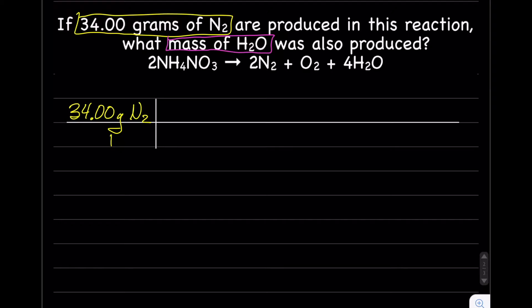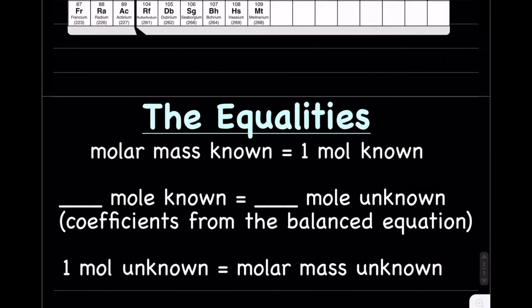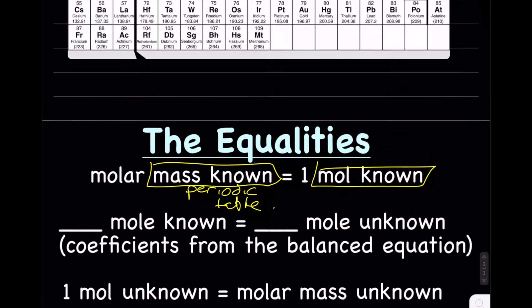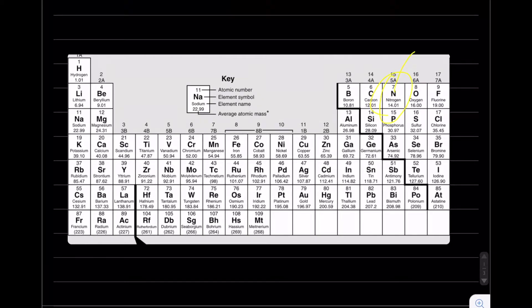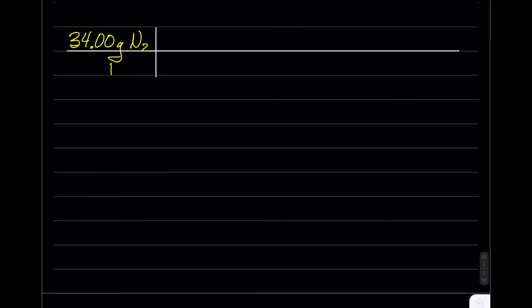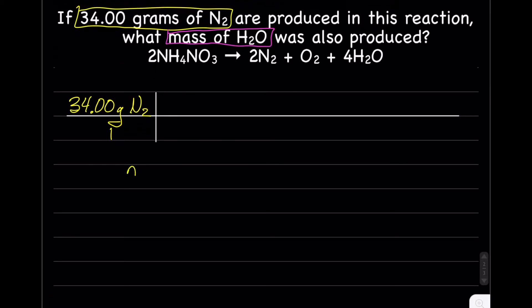And now we'll just start plugging stuff in. So we're at mass known because N2 is our known. If we're starting with mass known, it's going to be one mole known equals the molar mass of known. And remember, molar mass comes from the periodic table. So we had N2. We had two of them, right? So it'll be 14.01 grams plus 14.01 grams, giving us 28.02 grams.